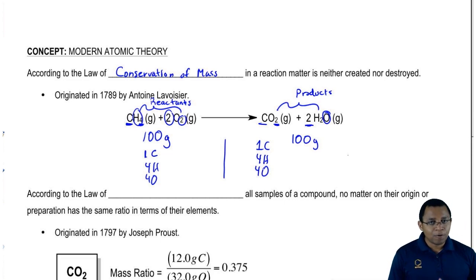Matter doesn't get destroyed. If we start out with 100 grams, we shouldn't end with less than 100 grams. We should only end with 100 grams because we're conserving the mass that we had.